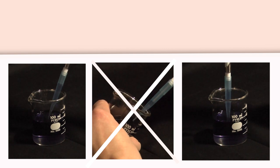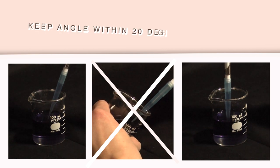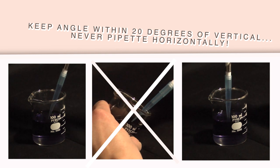In order to accurately draw the liquid into the pipetter, it is important that you keep the angle within 20 degrees of vertical. Never pipette horizontally.